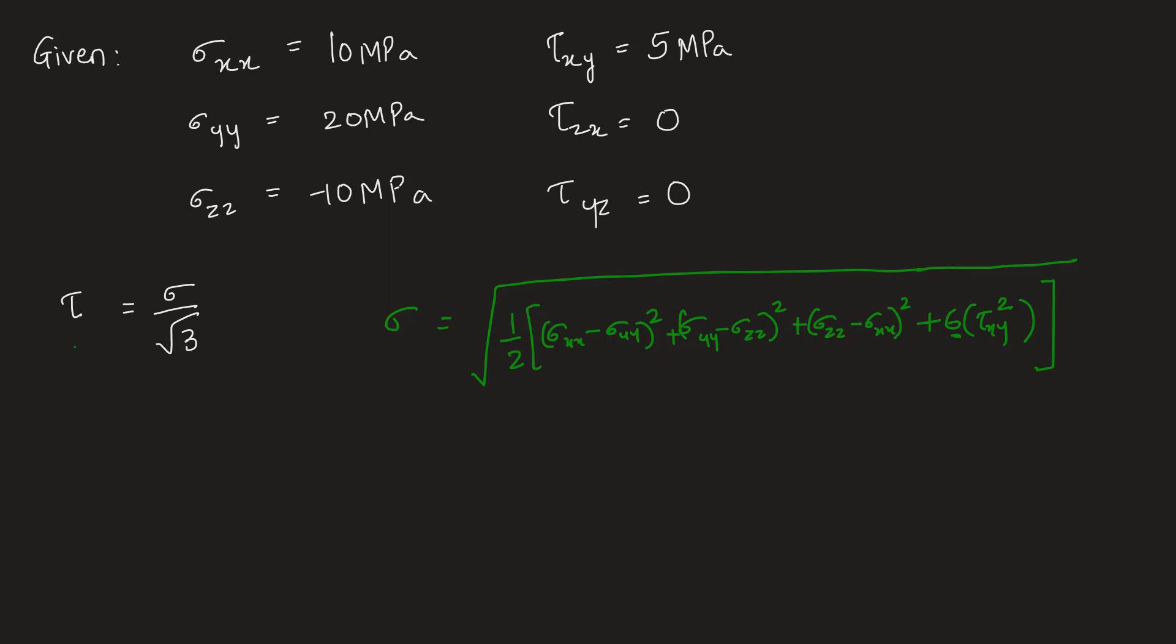Now let's substitute the values and find out the yield stress. Sigma is equal to under root of 1 by 2 into first bracket is sigma xx minus sigma yy, so it will be 10 minus 20 square, plus second one is 20 minus minus 10 square, plus third one is minus 10 minus 10 square. Here also pay attention with this negative sign. Plus 6 times tau xy is 5 square, bracket closed.